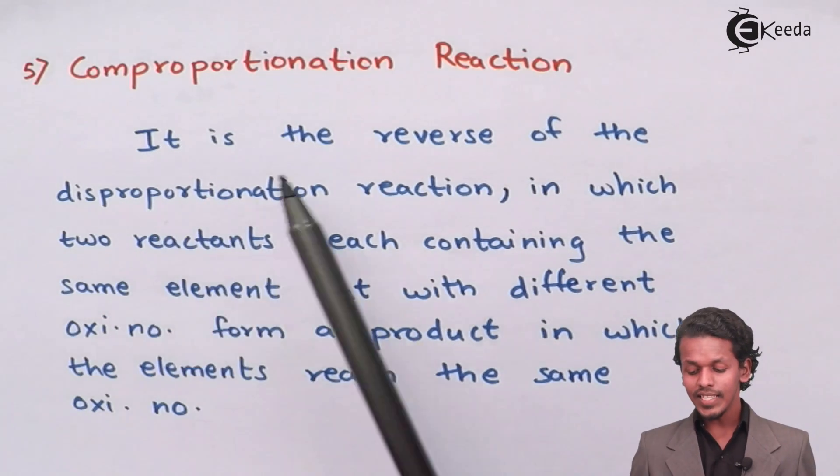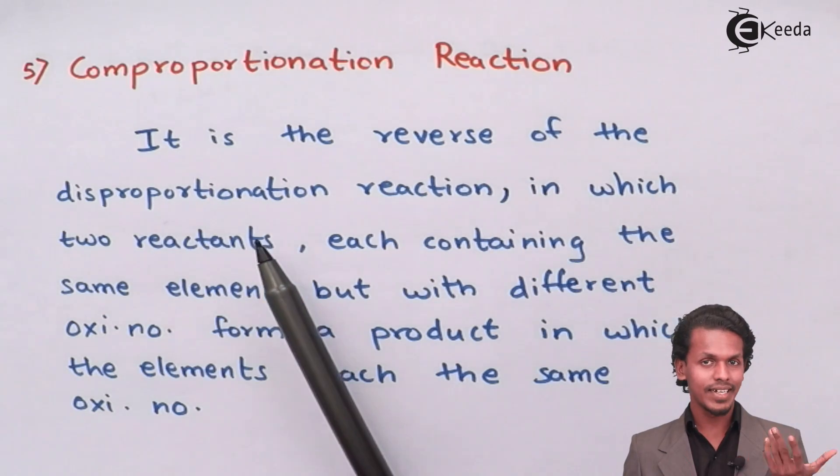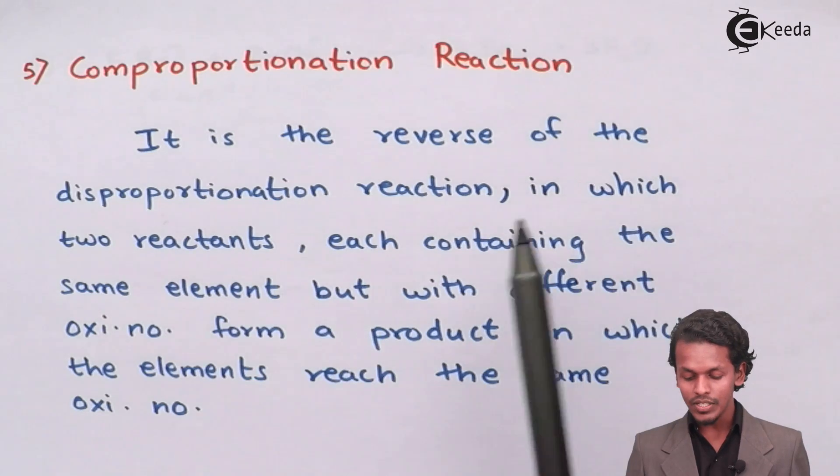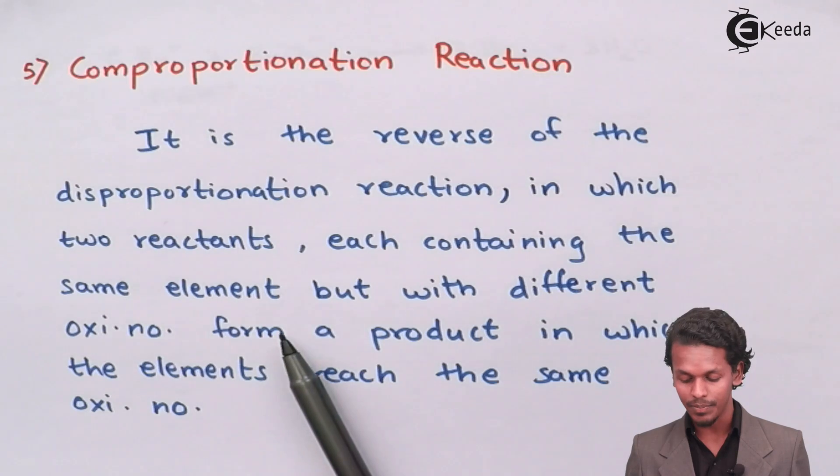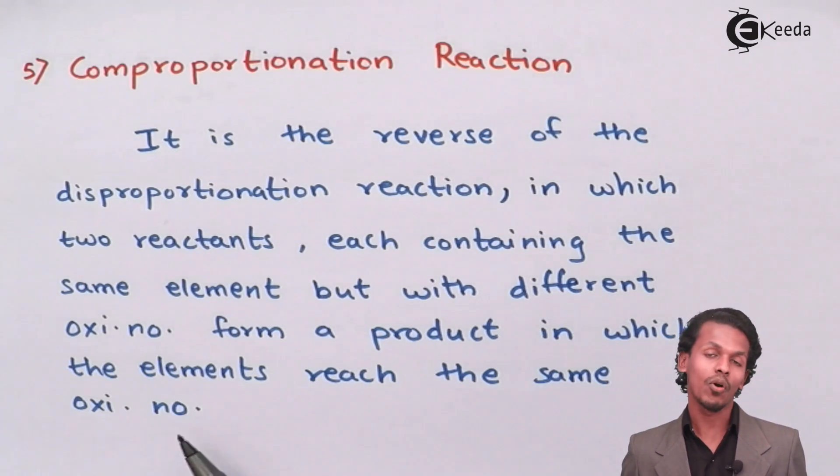This is the reverse of the disproportionation reaction that we did in the earlier lecture, in which two reactants each containing the same element but with different oxidation numbers form a product in which the element reaches the same oxidation number.